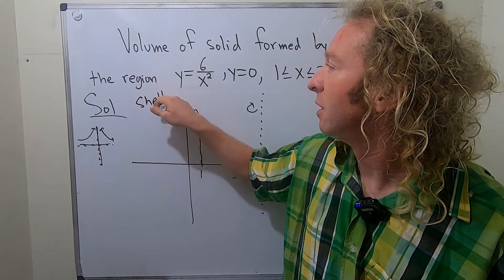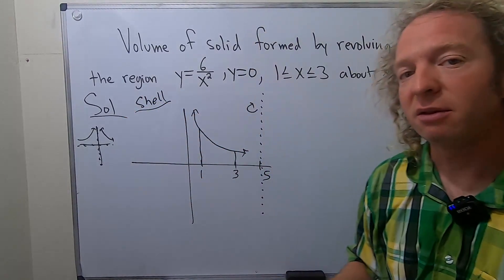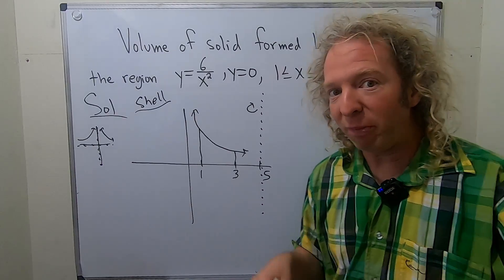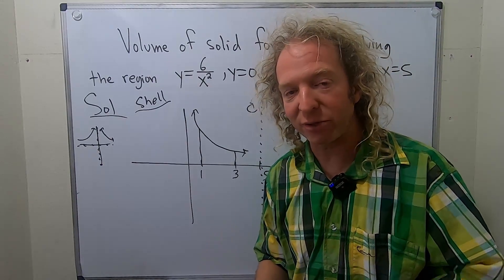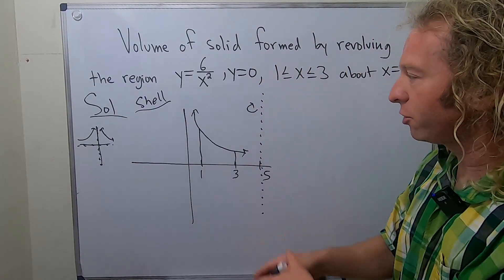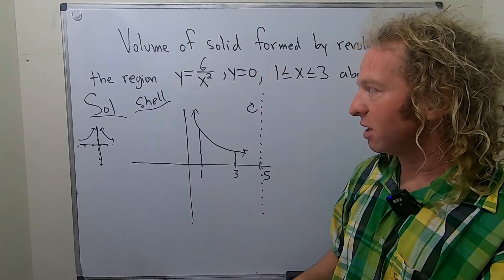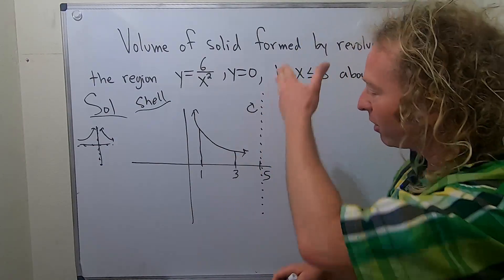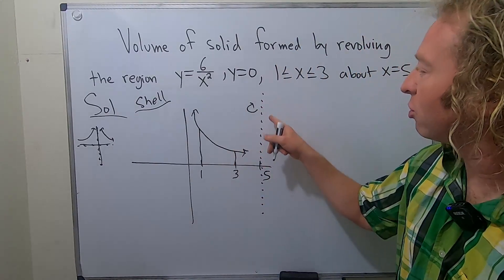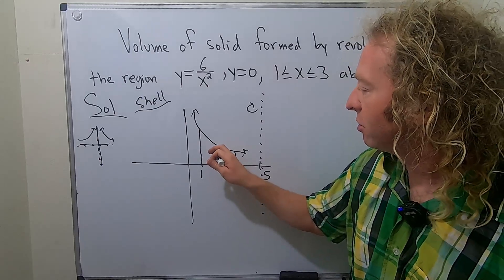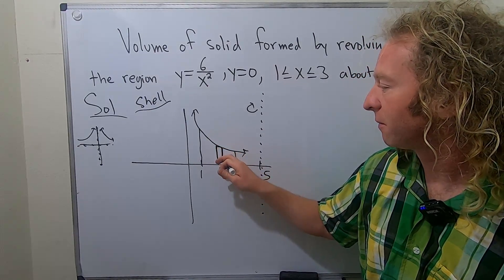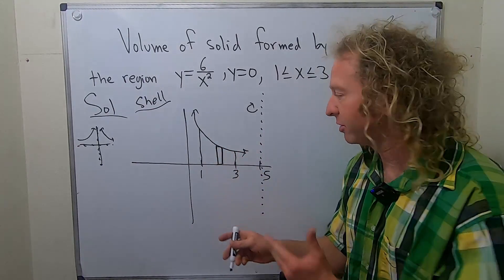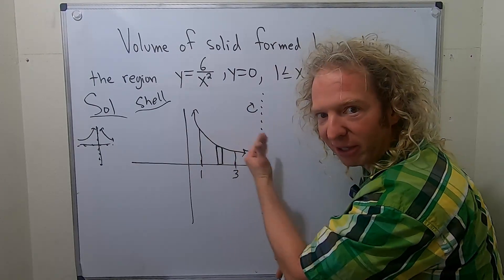We're going to use shell. So in the shell method, easy trick, shell parallel, shell parallel. So step one, you draw your rectangle and because it's the shell method, it's parallel to the axis of revolution. This is called the axis of revolution. So you draw your little rectangle like this. So shell parallel. So it's parallel, right? See how it's parallel.